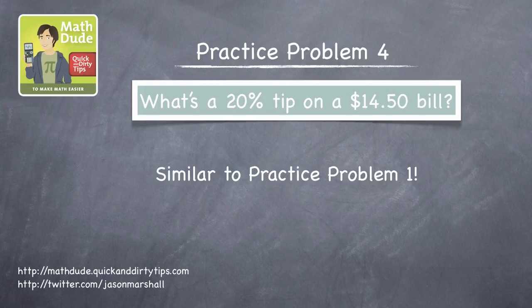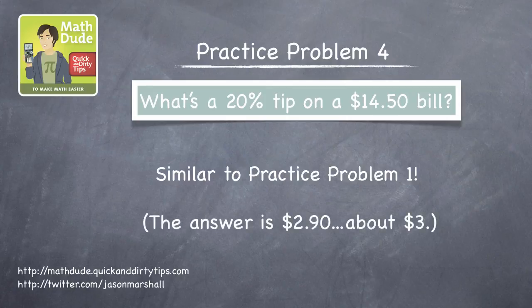The fourth problem asks for a 20% tip on a $14.50 bill. This is very similar to the first problem, so I'll let you work it out. The answer is $2.90, about $3.00.